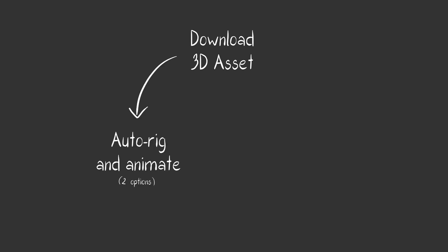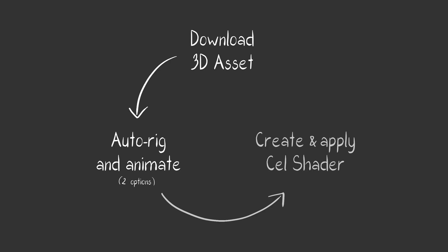Let's go over how we'll approach this. Here's the plan. First, download your 3D character model and texture. Then we'll rig and animate using an auto-rigger. After that, we'll apply a cell shader. Repeat the process for additional characters. Let's walk through where to download and how you should use the asset.